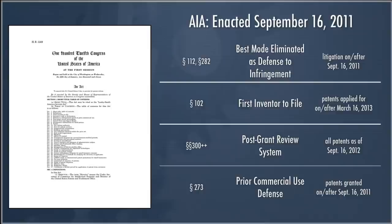Another significant piece is a new system of post-grant review in sections 300 and thereabouts. The idea is to create an administrative review process whereby patents granted by the patent office can be reviewed by a special board within the patent office dedicated to this purpose. This should take the place of some litigation — rather than going to court to get a judgment about patent validity, you can go to the patent office through an administrative process, reducing litigation costs and disputes.